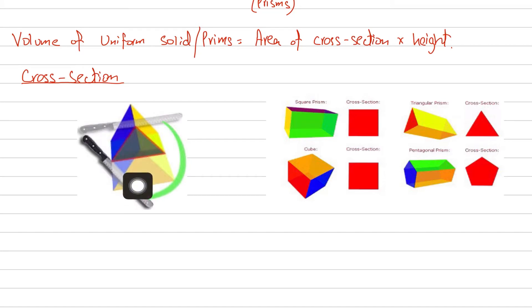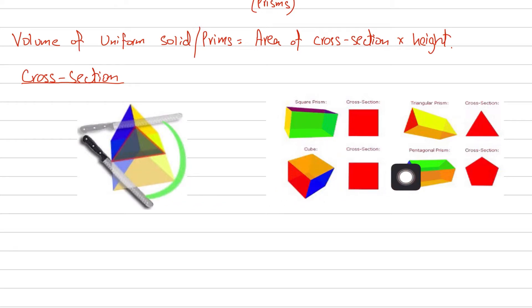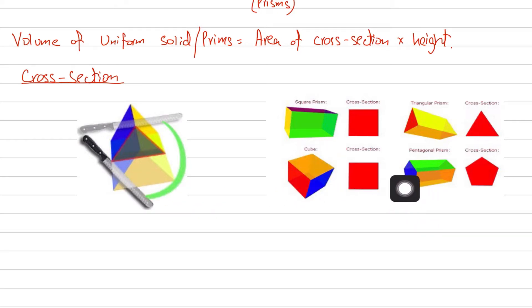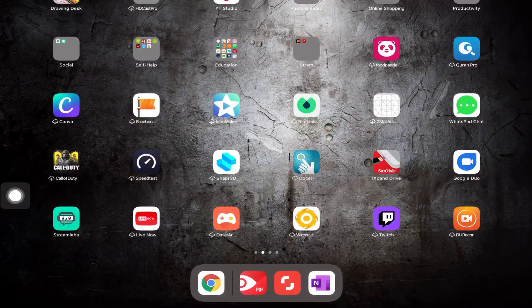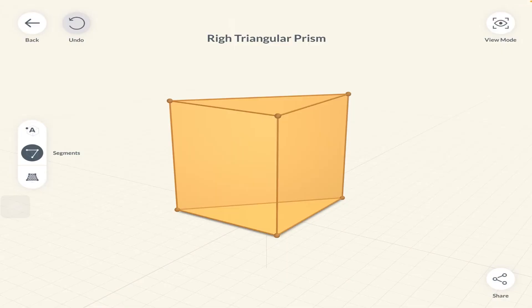For example, a pentagonal based prism gets its name because its cross section is pentagonal in shape. Let me show you further what I mean with a couple of examples.